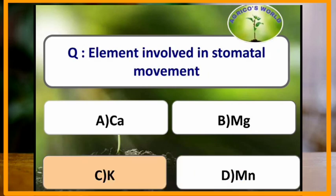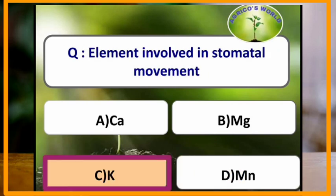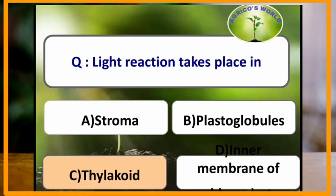Element involved in stomatal movement is potassium. Light reaction takes place in which organelle of the cell? Light reaction takes place in the thylakoid.